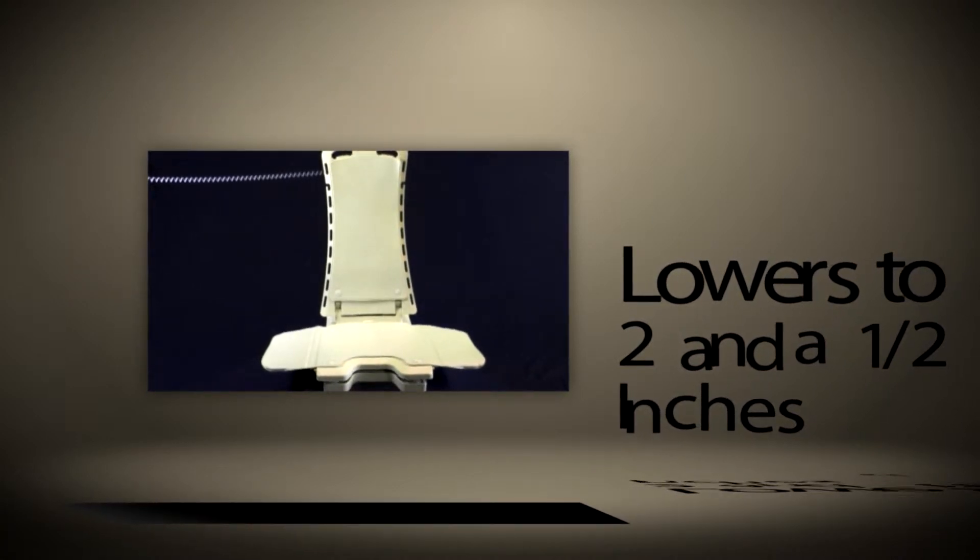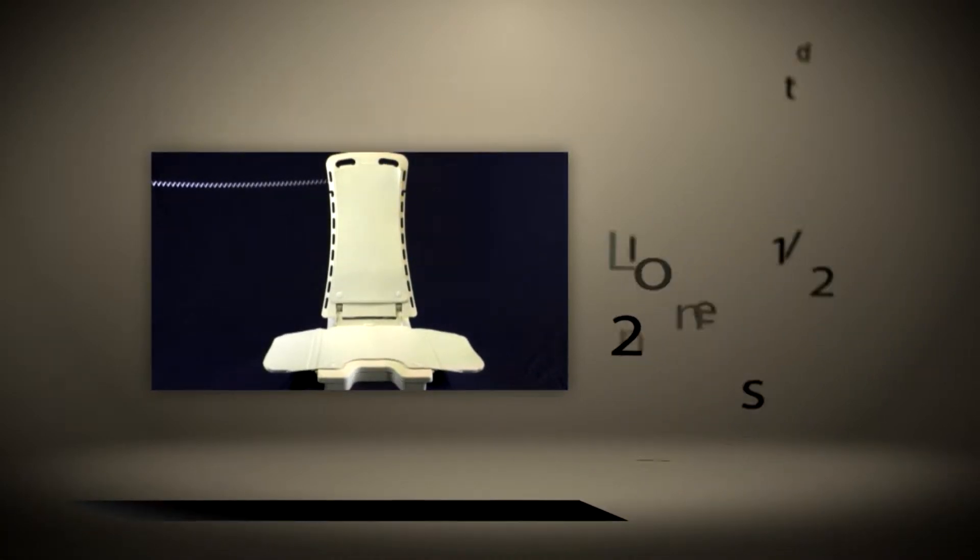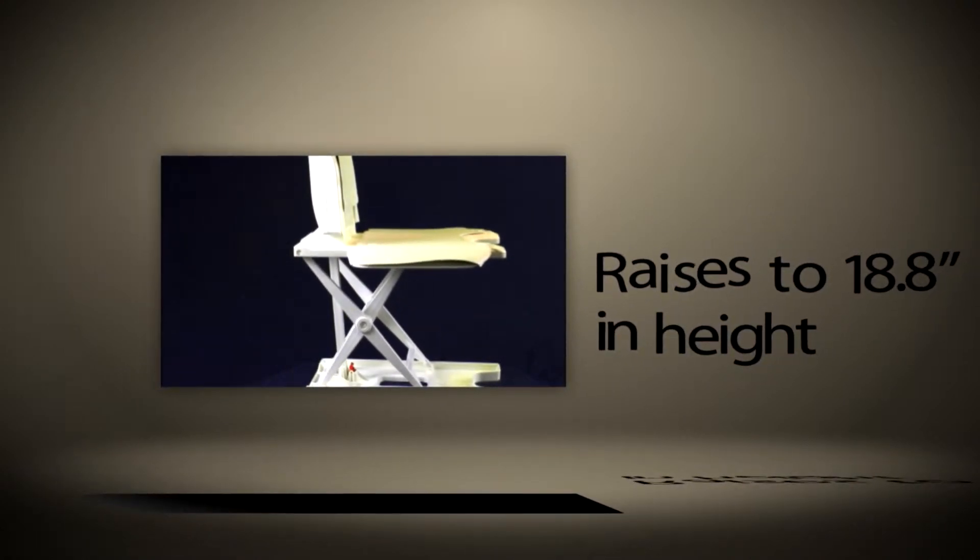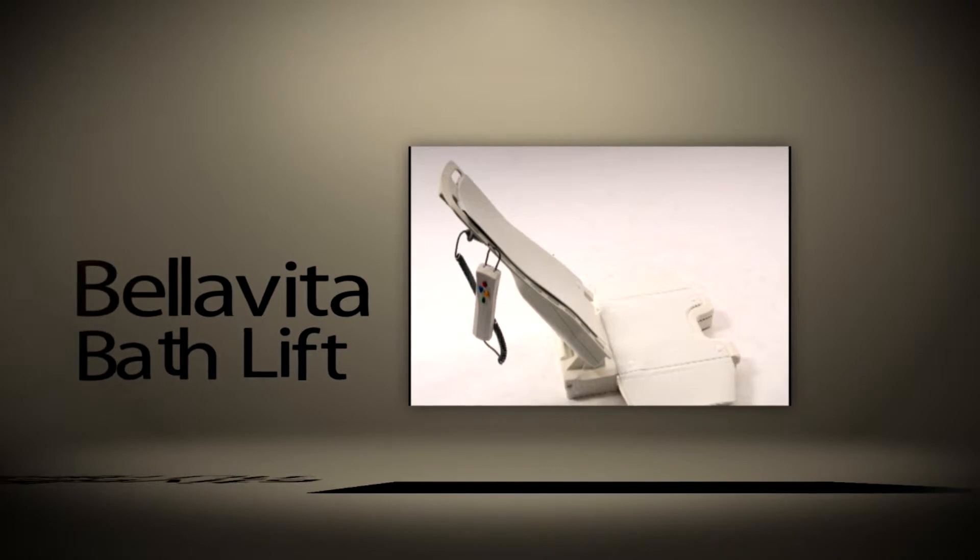Unique to the Bella Vita is the ability to lower to just two and a half inches from the bottom of the bathtub and able to rise to a record height of almost 18.8 inches, making this bath lift the ideal choice for not only standard baths but deeper tubs as well.